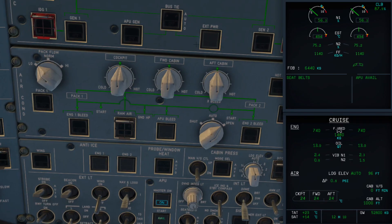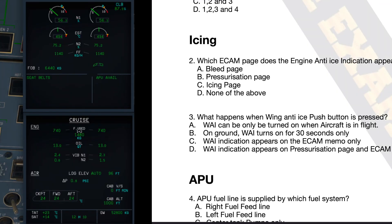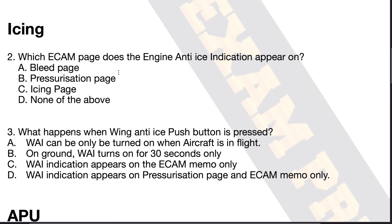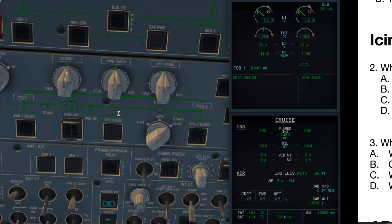Let's move on to question number two, which deals with the icing section. The question is: which ECAM page does the engine anti-ice indication appear on? Option A is bleed page, option B is pressurization page, option C is icing page, and option D is none of the above.